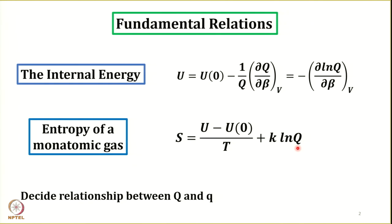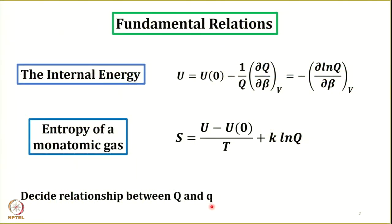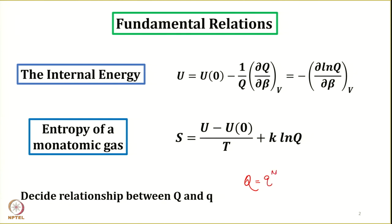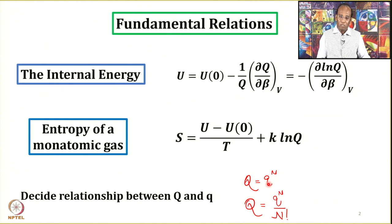When we proceed further in connecting thermodynamic quantities to other thermodynamic quantities, we need to decide the relationships between canonical partition function and molecular partition function. These relationships depend on whether the particles are distinguishable or indistinguishable. We will be using either Q = q^N for distinguishable particles, or Q = q^N / N! for indistinguishable particles.